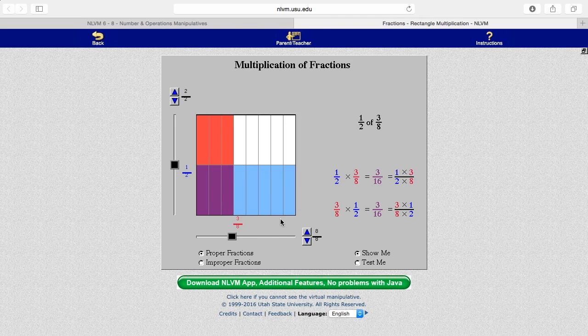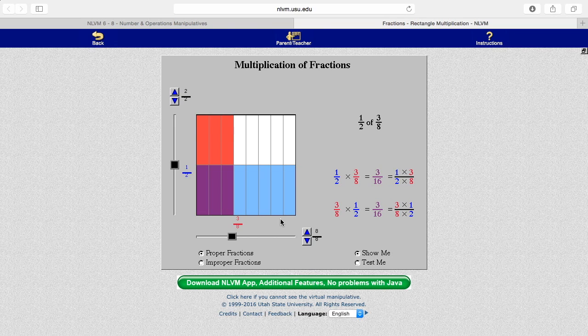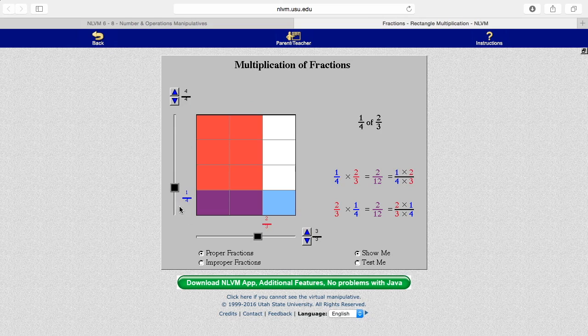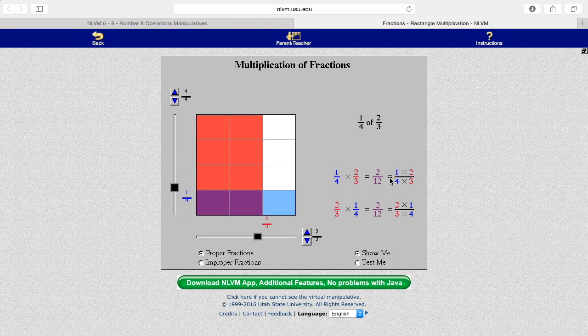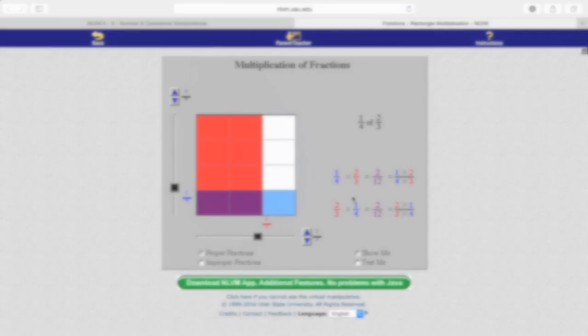I'm going to show you one of the other ones we did. Let's look at one-fourth times two-thirds. I have one-fourth here, and two-thirds here, and you see how we get two out of twelve, which will reduce down to one-sixth.